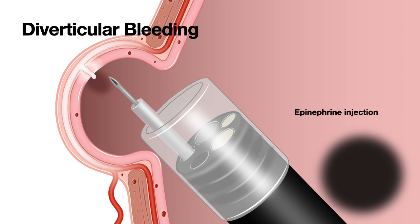It's always important to keep in mind that whenever we use epinephrine, if technically feasible, one should follow up with an additional hemostatic measure. For diverticular bleeding, one could use a clip or cautery depending on the bleeding site. If the bleed is in the dome, clipping is preferred. If it is at the neck, you could either cauterize or clip.